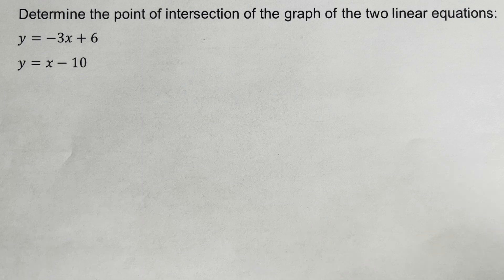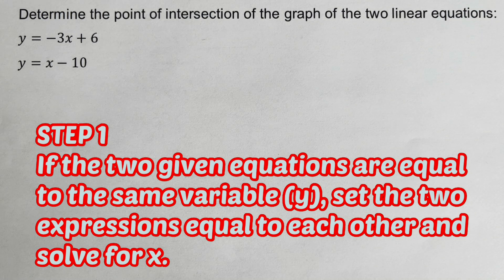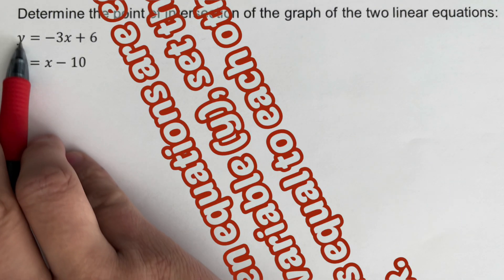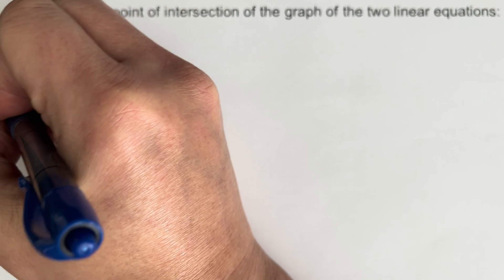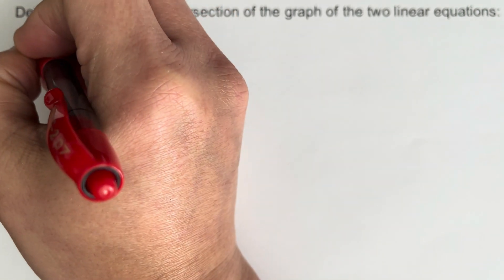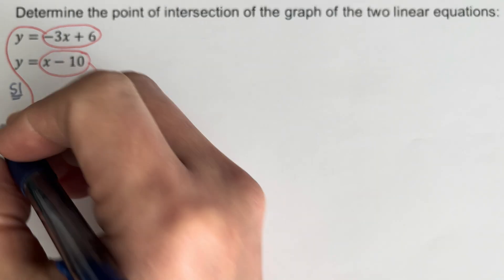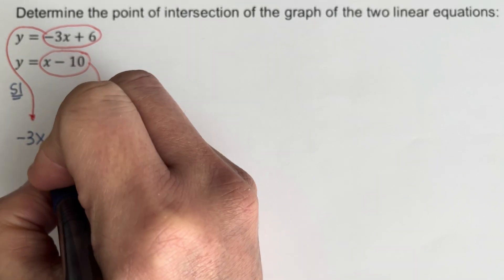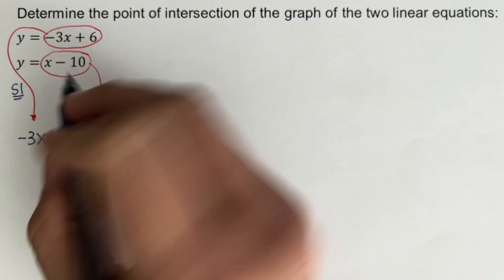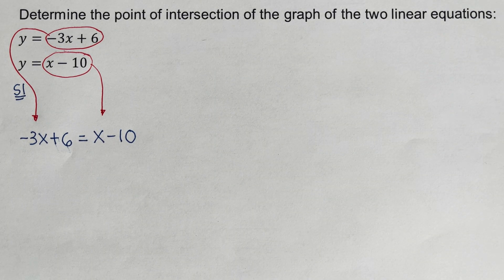Okay, let's go over the second problem. Step 1: since both equations are equal to y, we set the right sides equal to each other and solve for x. Taking the right side of the first equation and setting it equal to the right side of the second gives us negative 3x plus 6 equals x minus 10.